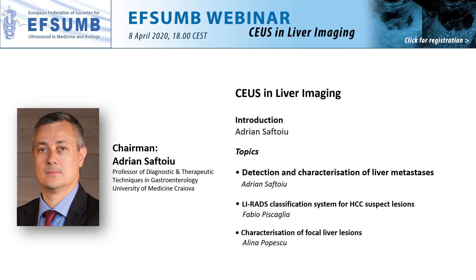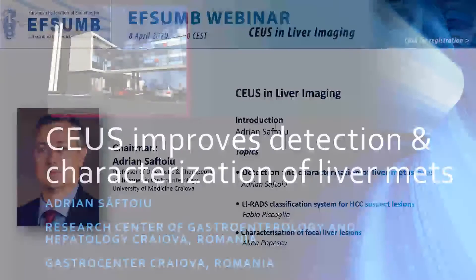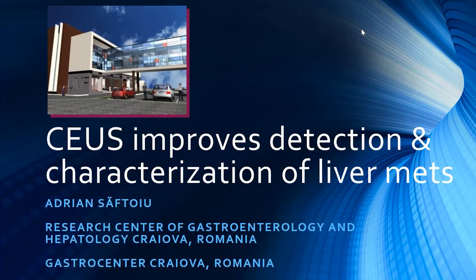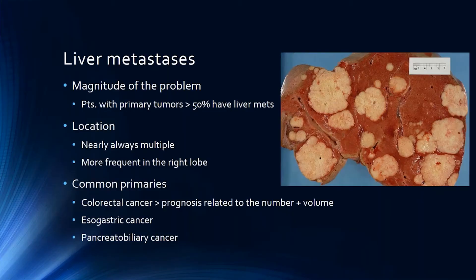Starting with introductory data on liver metastases: patients with primary tumors usually have liver metastasis in more than half of cases. They are nearly always multiple, more frequent in the right lobe, and arise from many primary cancers including colorectal, esophageal, gastric, pancreatic, and biliary cancers.